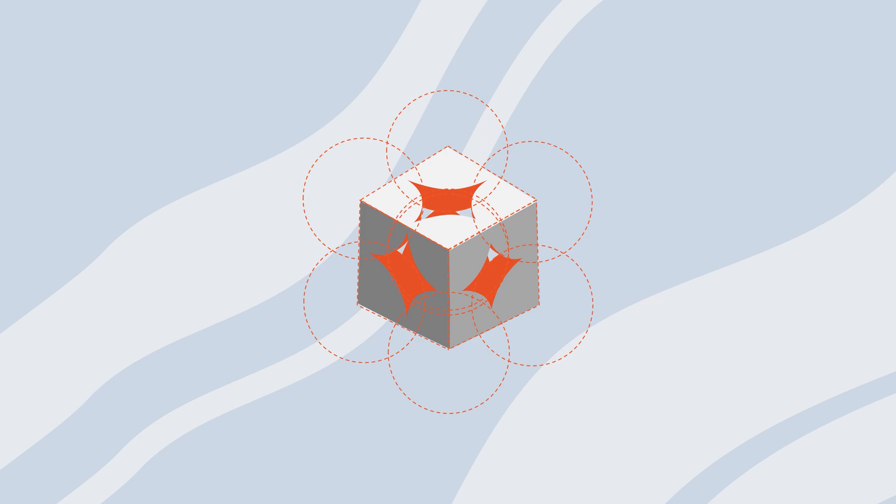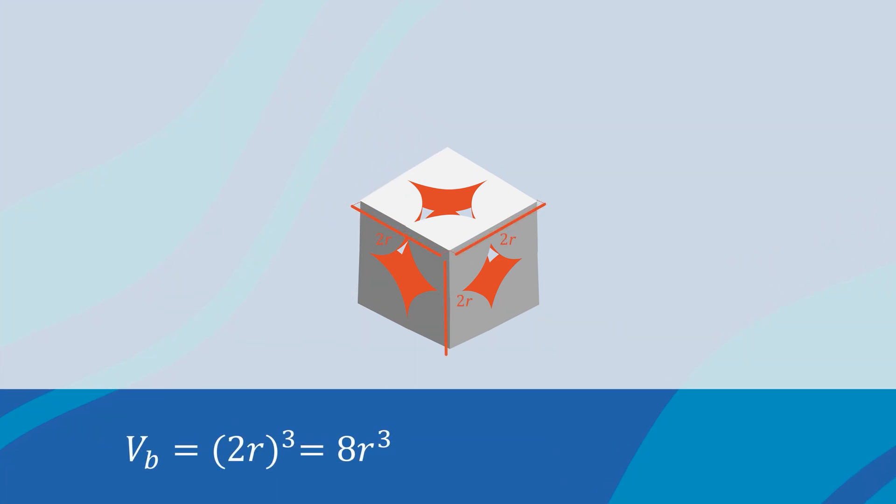The length of the cube is 2r, where r is the radius of the sphere. Then, the bulk volume of the cube will be 8r cubed.